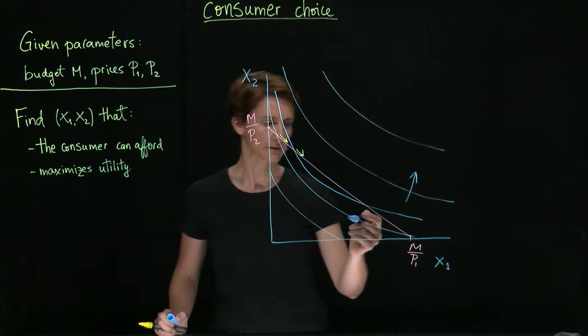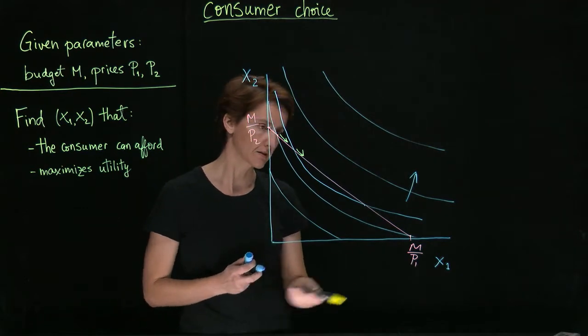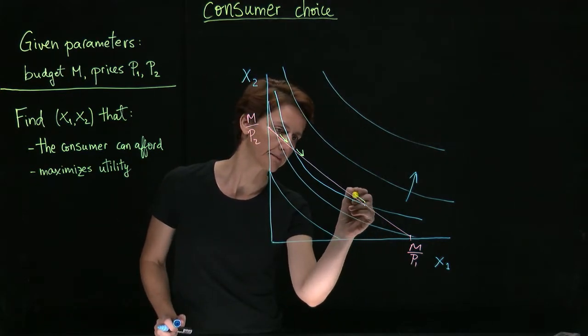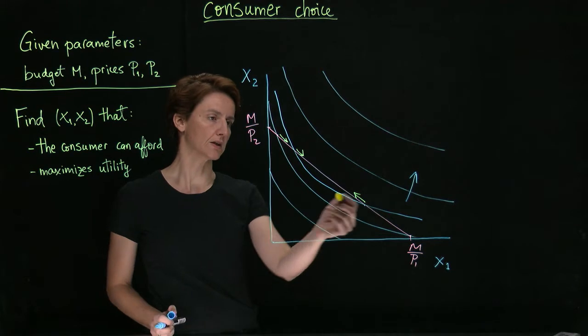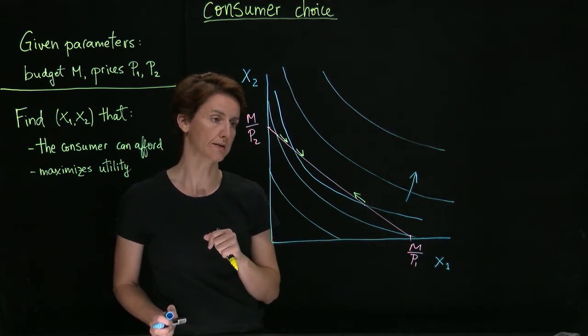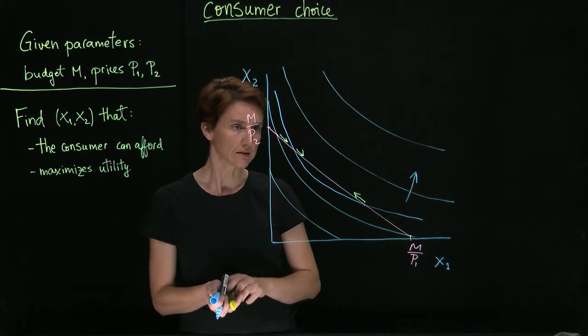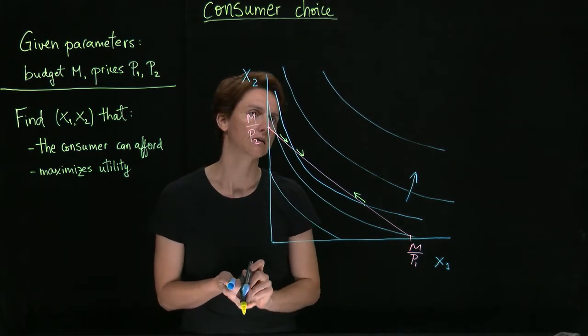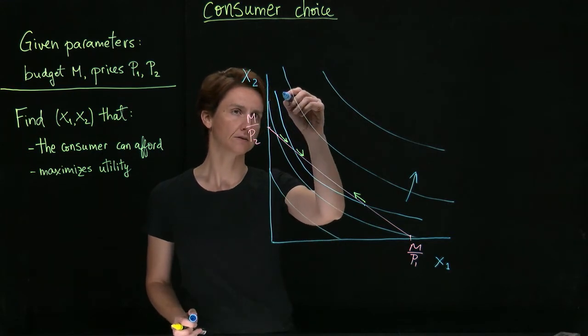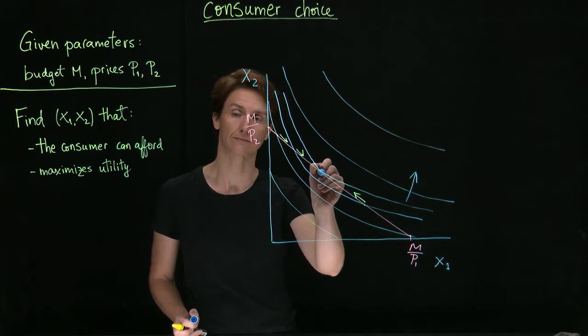What if we're considering this spot? Well, from here, we can move up. We can increase how much we have of good two and reduce the amount of good one. Again, we could do that successively until, finally, we arrive at an indifference curve that only makes contact to the budget constraint at one point.